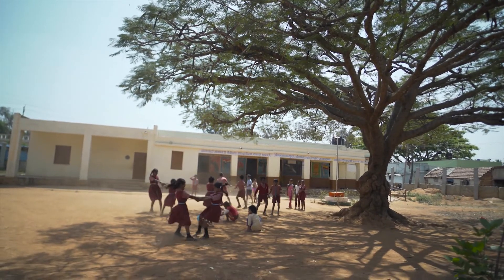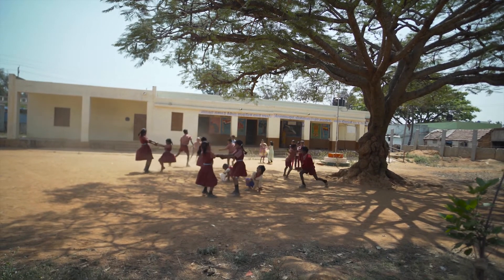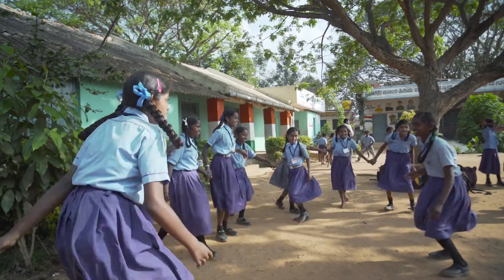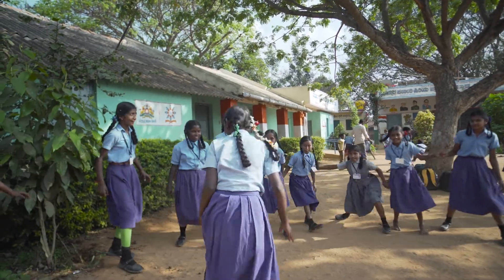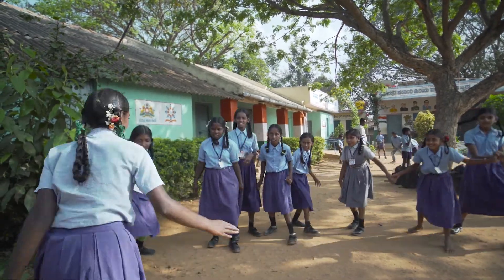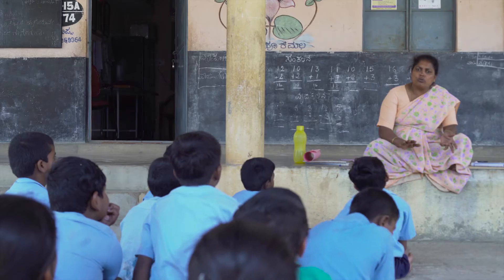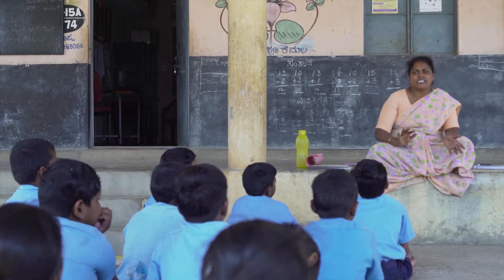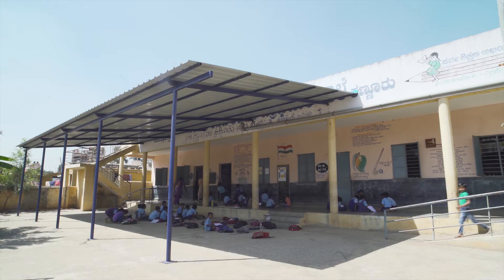We have not been limited to this area alone. We've done schools in the centre of the city, in Vartur, Gunjur, and Kaswanahalli. There's a school near Kaikondrali called the Renuka School. There have been different donors at different points in time, and schools across the city where we've been able to implement rainwater harvesting.